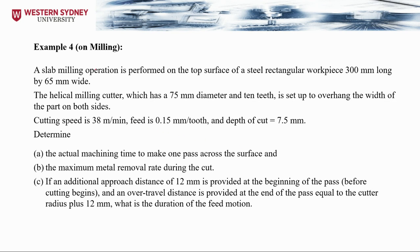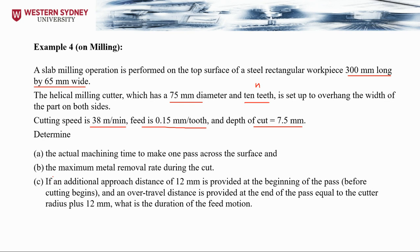Another milling example: a slab milling operation on the top surface of a steel rectangular workpiece, 300 mm long by 65 mm wide. We have a helical milling cutter with 75 mm diameter and 10 teeth, set up to overhang the width of the part on both sides. The cutting speed is 38 m/min, feed rate per tooth is 0.15 mm/tooth, and depth of cut is 7.5 mm.